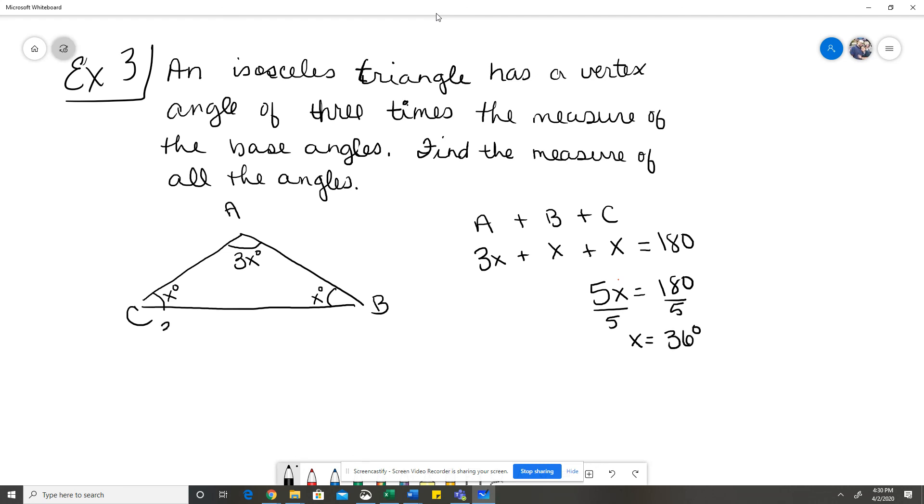So 36 here, 36 here, and then to get angle A, we do 3 times 36, which gives us 108 degrees.